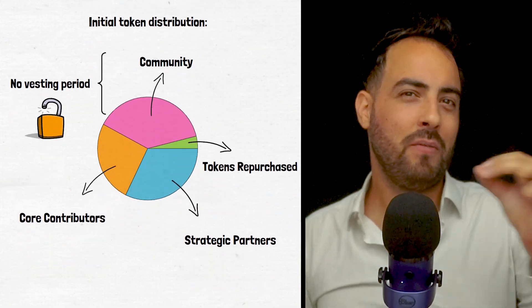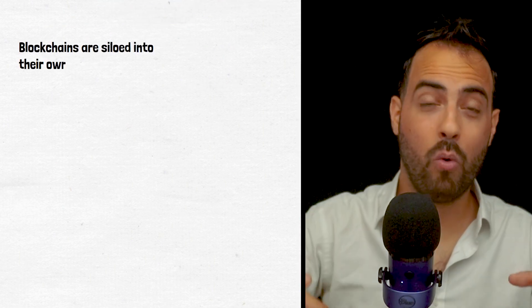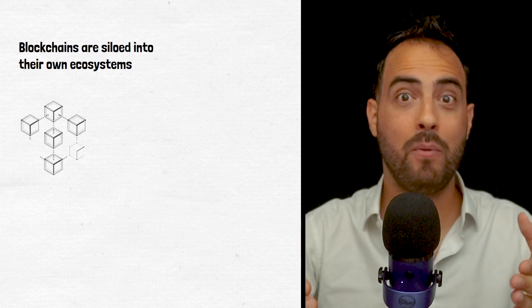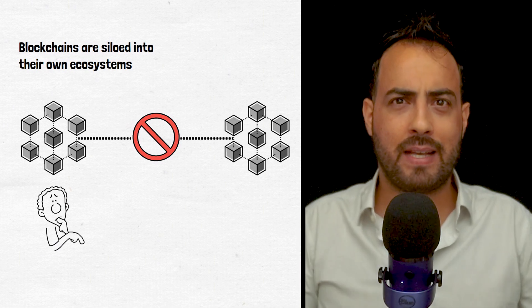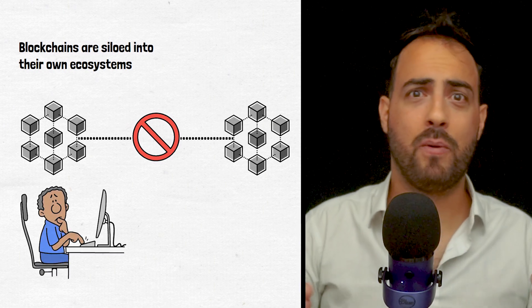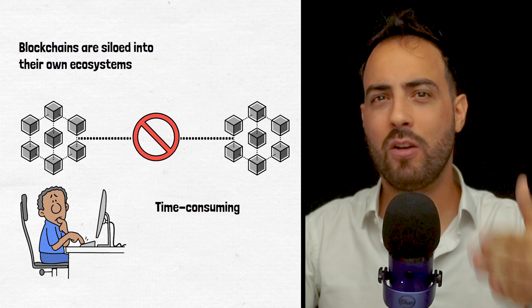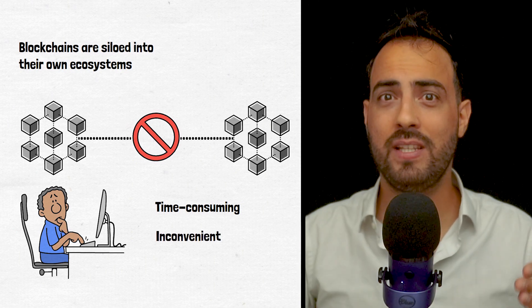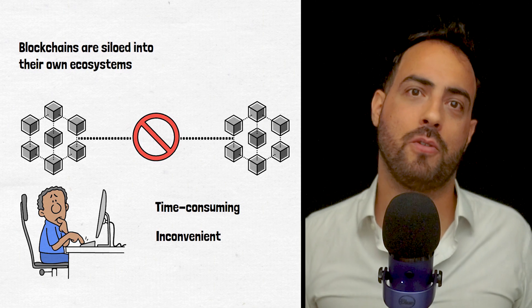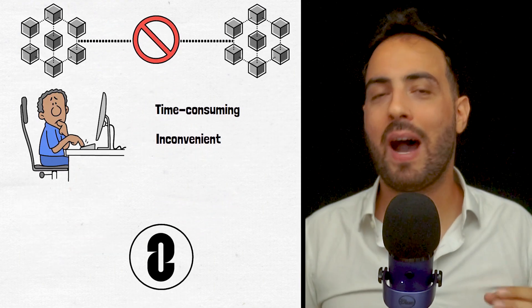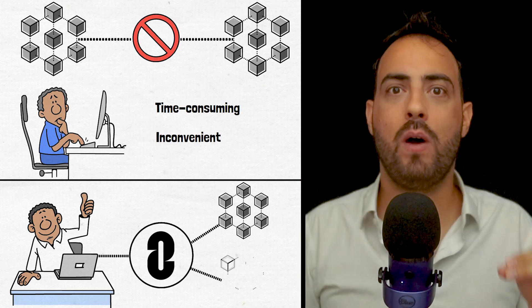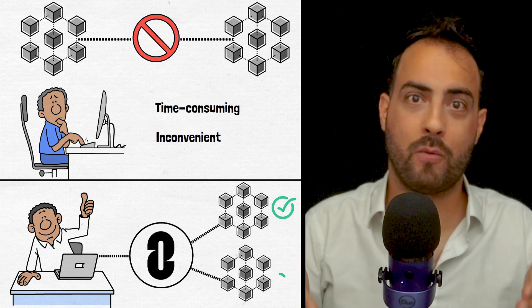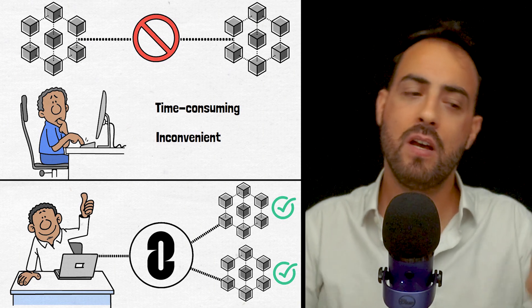Layer 0 has spotted a flaw in how blockchains operate, which is they are often siloed into their own ecosystems and unable to communicate or interact with other blockchains. From a user experience perspective, this is both time-consuming and inconvenient and is often cited as one of the reasons delaying crypto's mass adoption. Platforms like Layer 0 allow users to interact through many blockchains as if they were only using one, ultimately removing time consumption and inconvenience from the end-user.